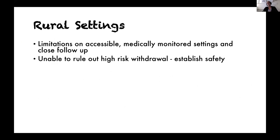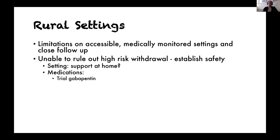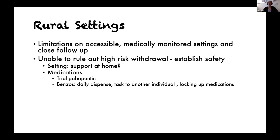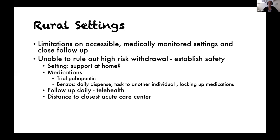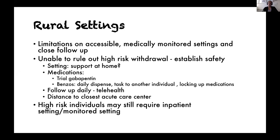In rural settings where there's a limitation of monitored settings available, it is even more important to establish safety. What are their supports at home? Is there somebody who can help monitor their withdrawal or bring them to acute care if things worsen? With medications, still trial gabapentin, but if benzos are required, consider daily dispensing at a maximum of 40 mg of diazepam daily equivalents. Task another individual to monitor withdrawal, dispense medication, and ensure medications are locked up. Follow up patients daily using telehealth, and consider the distance to the closest acute care center — if they're three hours away, can they present themselves or be brought in if they develop delirium tremens?